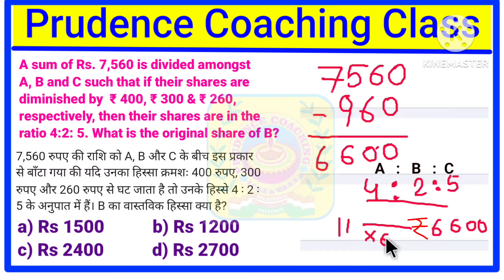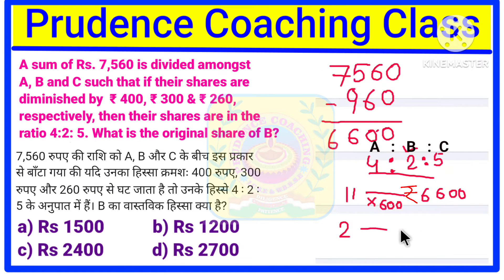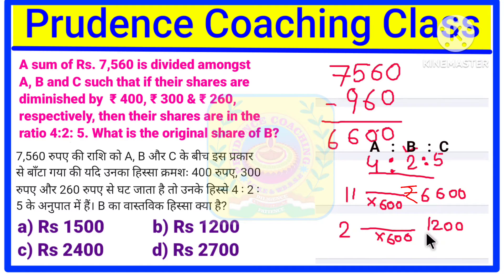So 4 plus 2 plus 5 equals 11 in ratio, which corresponds to 6600 rupees in actual value. That means 1 unit equals 600 rupees (11 × 600 = 6600). Since B's ratio is 2, B's reduced share is 2 × 600 = 1200 rupees. But 1200 is not the final answer.